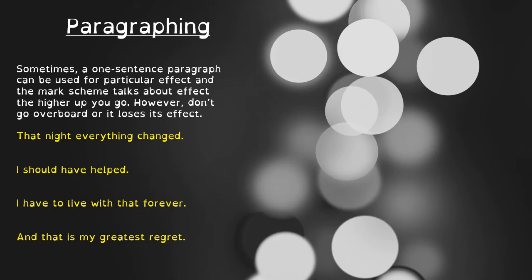Here's where your 'varied and effective' can come in. When it comes to paragraphs, there's not a lot you can do other than get them right. But if you think about short, dramatic statements that you can use within your story or description — like the four yellow ones we've got here — these can work quite well on their own. 'That night everything changed' might work by itself as a paragraph before moving on to describe the night. 'I should have helped' might work as well, or something like 'And that is my greatest regret' — that could work as the final line in a piece of writing and if you use it by itself it has all the more power. Don't overuse these — I wouldn't use more than one single-line paragraph in a piece of work.